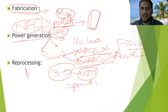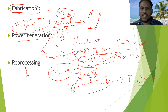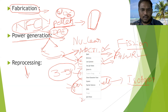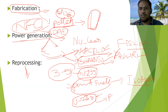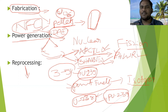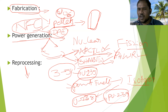The spent fuel rods undergo reprocessing to separate the isotopes — waste, usable material, and fissile material. Uranium-238, when fast neutrons collide with it, can be converted into plutonium-239. This separation and conversion of plutonium-239 from spent fuel is the reprocessing step.